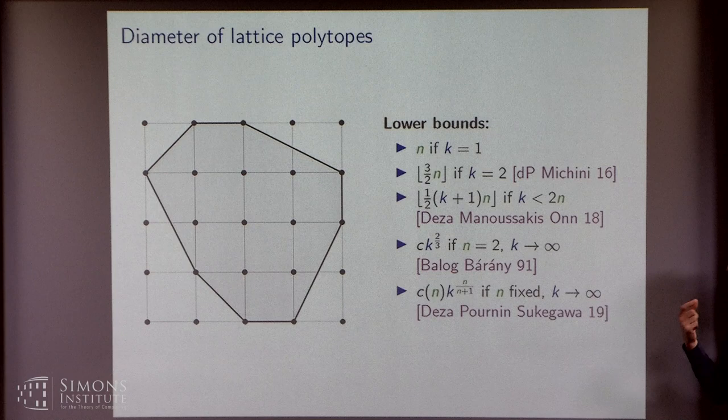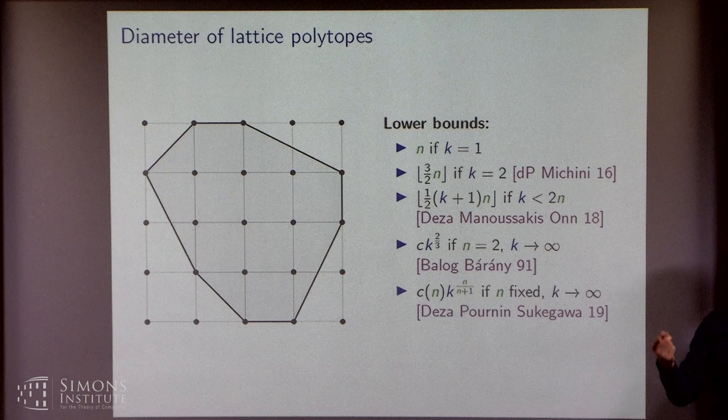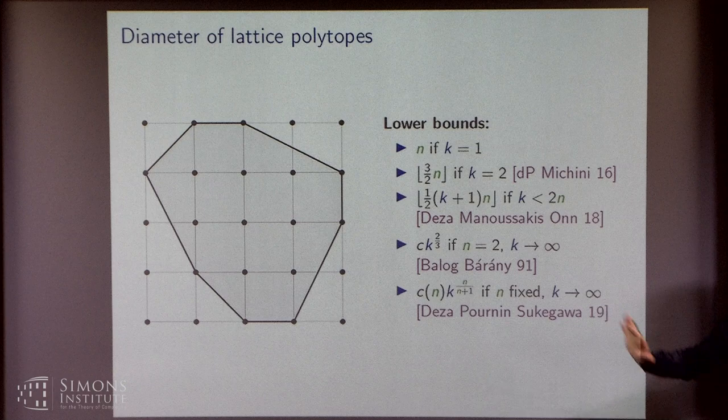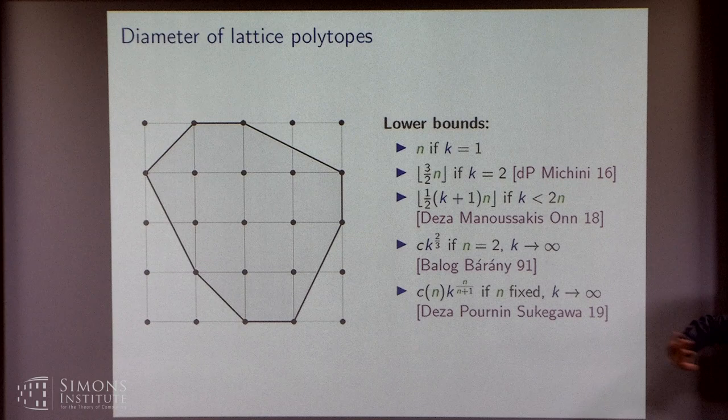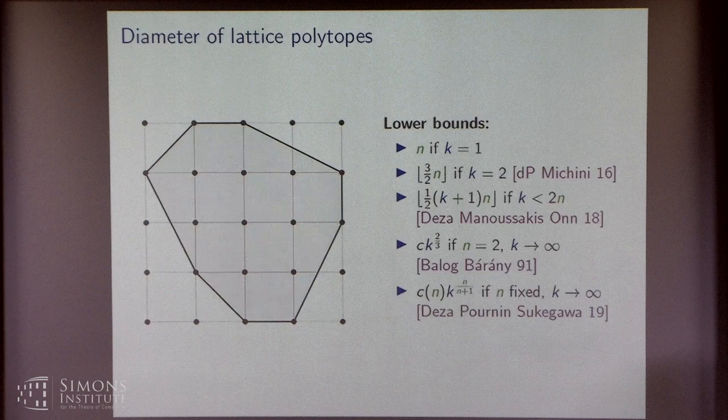But the takeaway from these two slides that I care about in this talk is that essentially both lower and upper bounds are linear in k and n. And what is very important is that all these bounds are in terms of these two parameters, which are n and k, which somewhat tells us that they are a good choice when you want to study the diameter of lattice polytopes, as opposed to the general case of polyhedra or polytopes, where you normally look at n and m, which is the number of inequalities. Essentially, all these results don't care at all about the number of inequalities.